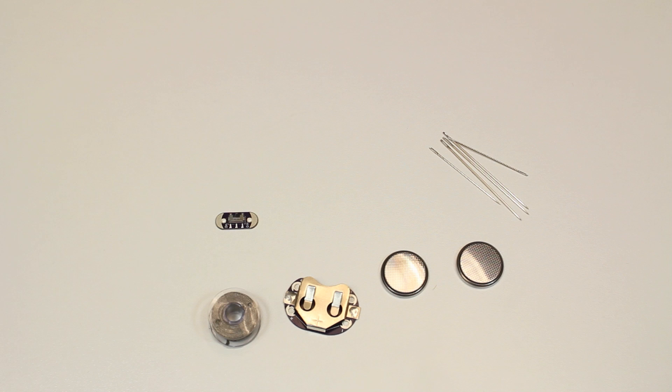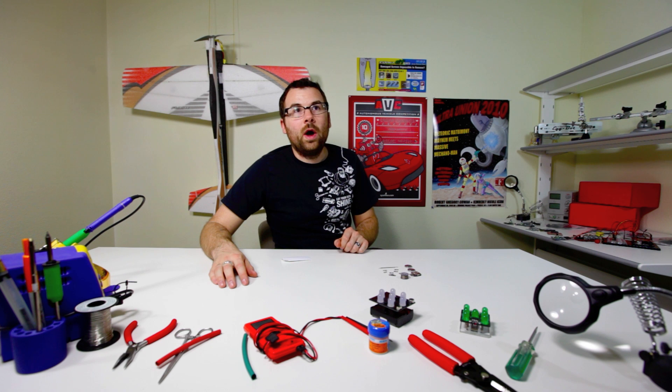we've got a slide on and off switch, we've got just a push button switch, and then we've got five individual different colored LEDs. We've got a red, a green, a yellow, a white, and a blue.